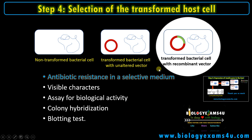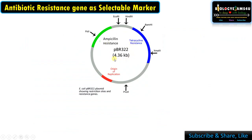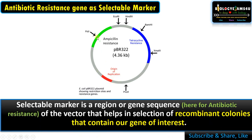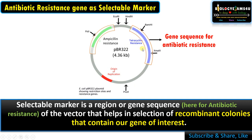Let us discuss the use of antibiotic resistance medium in selecting the recombinant vector. This is pBR322, a widely used genetically engineered vector. It has an ORI (origin of replication) derived from E. coli — a sequence required for replicating inside the host. There are two selectable markers: the ampicillin resistance gene and the tetracycline resistance gene. There are also different restriction sites: PstI, EcoRI, and BamHI. A selectable marker is a gene sequence of a vector that helps in the selection of recombinant colonies containing our gene of interest.